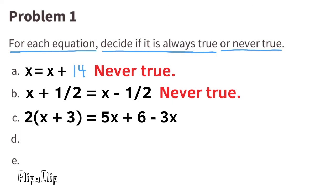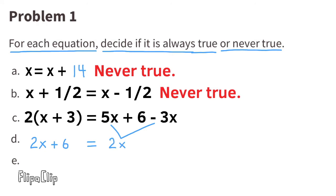C: 2 times X plus 3 equals 5X plus 6 minus 3X. Use the distributive property to multiply 2 times X, and you get 2X, and 2 times positive 3, you get positive 6. Collect like terms: 5X minus 3X equals 2X. Now the equation reads 2X plus 6 equals 2X plus 6, and that's always true.